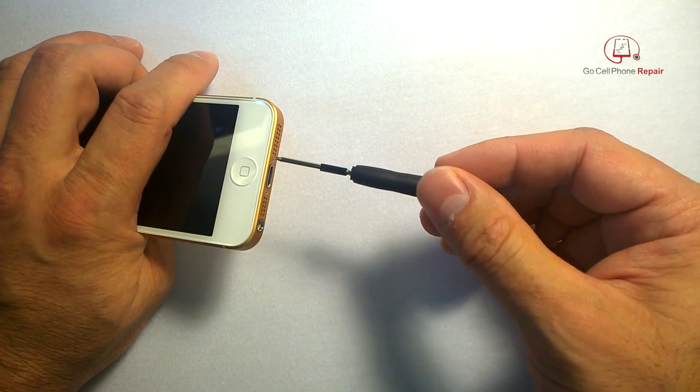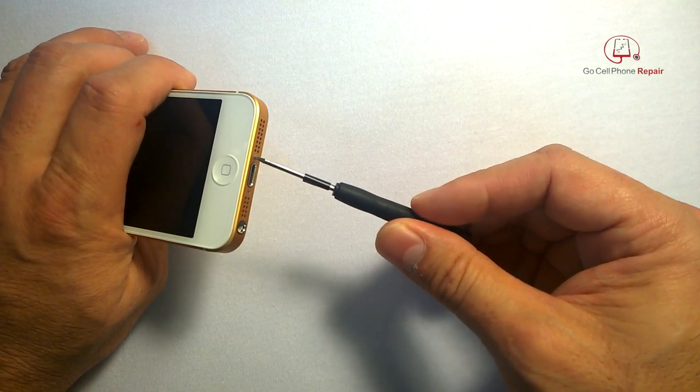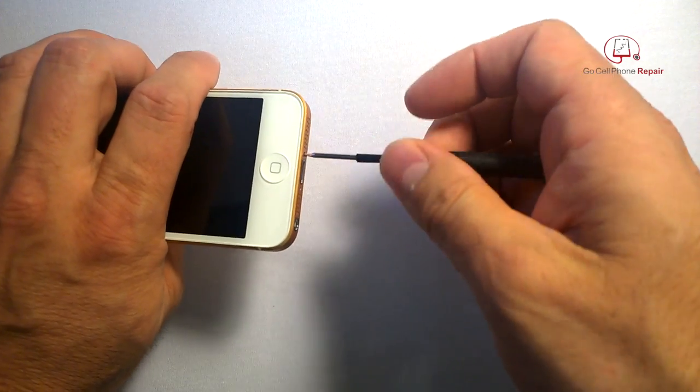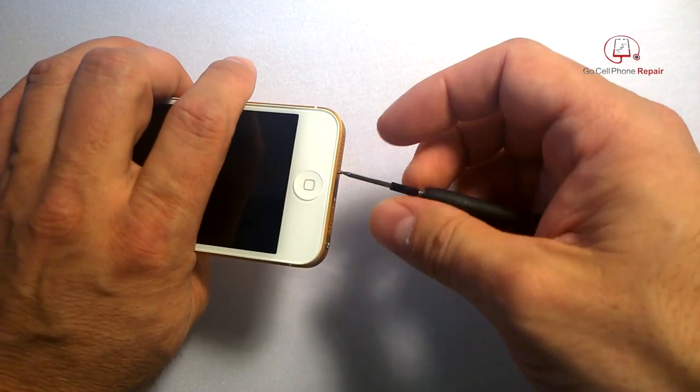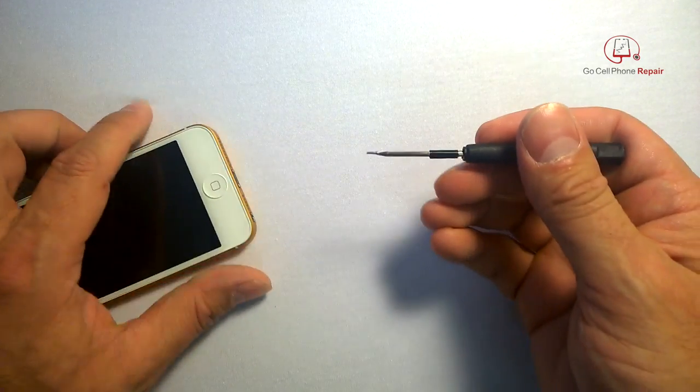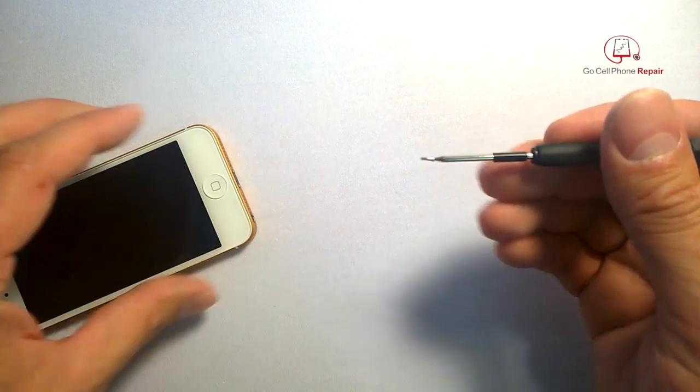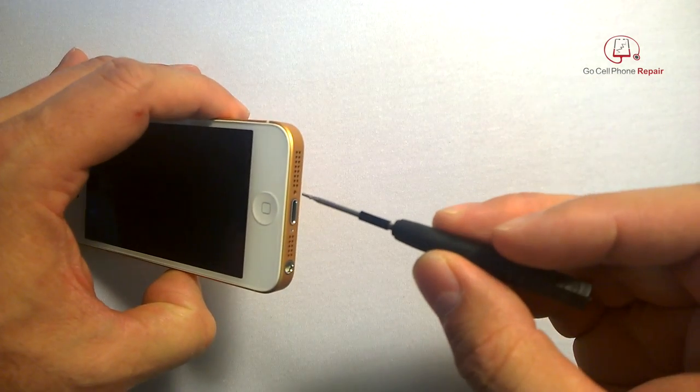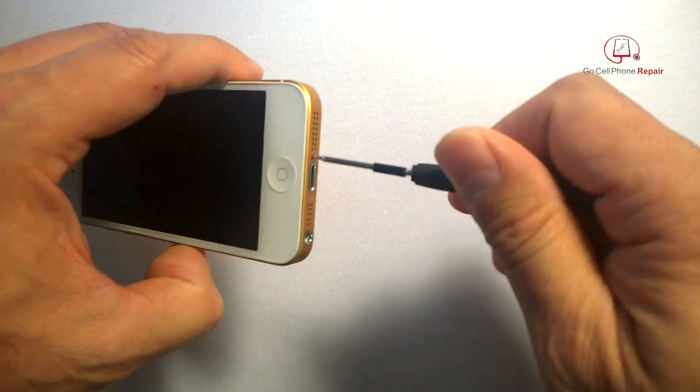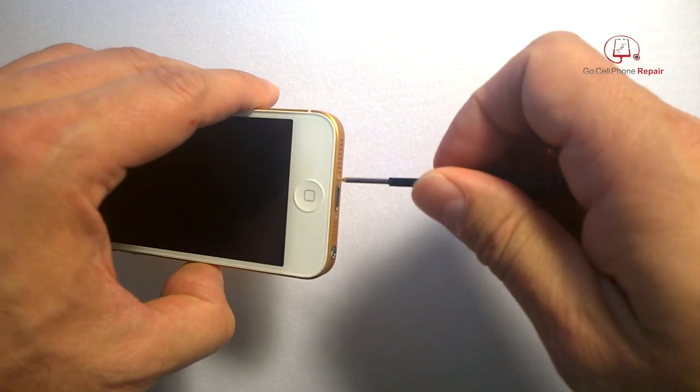I actually use these still during training because it gives the students a good idea about how much torque is necessary to apply to these screws so that you don't over-tighten them. They do serve a purpose, but I wouldn't expect these to last very long. Over time, they do wear down. The tips get kind of bent out of shape, so these are really designed for one-time use or maybe a couple of uses here and there, and then eventually you'll move on to something else that's going to be a little more reliable.